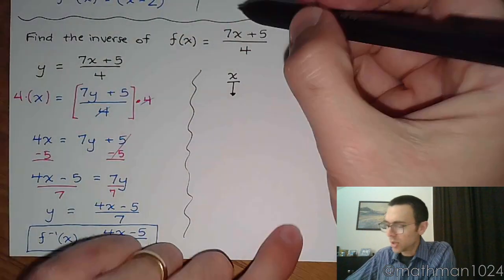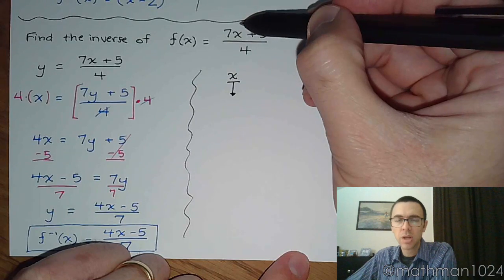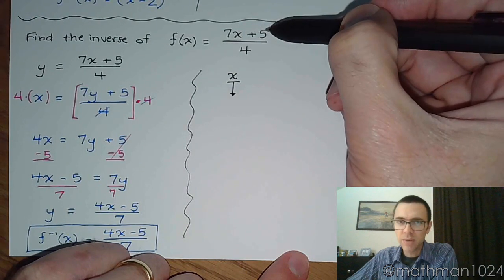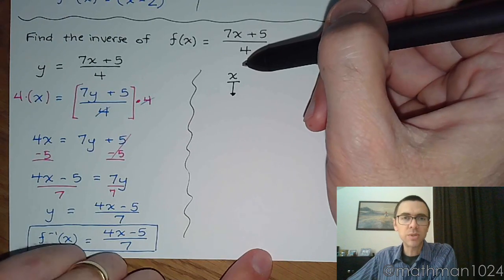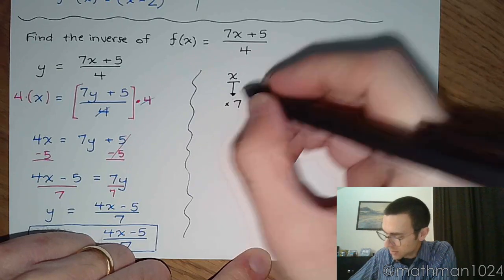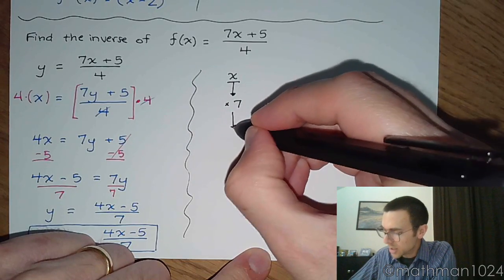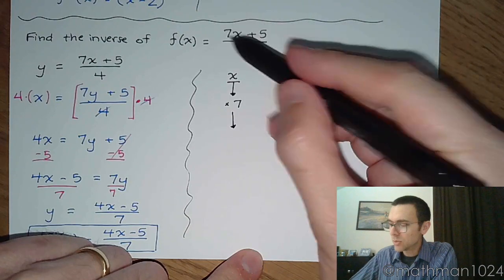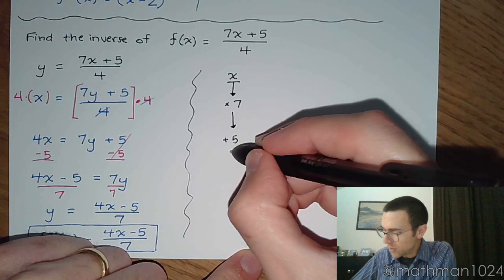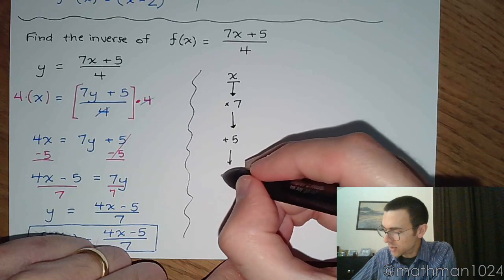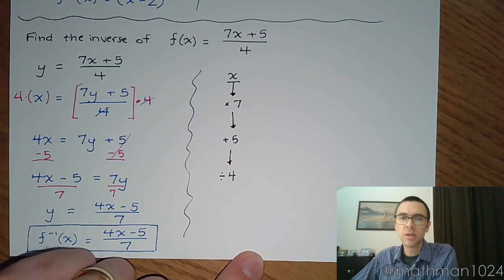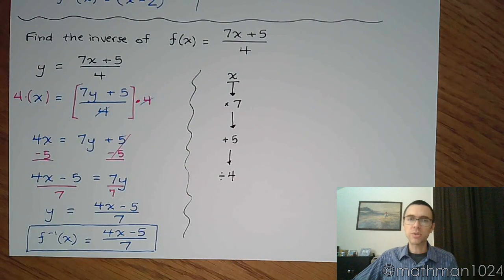So if I were to plug, say, the number 2 in here, what's the first thing you do if you plug in 2? Well, you wouldn't add 5. You wouldn't divide by 4. You multiply times 7 first. So the first thing you do is multiply times 7. After you multiply times 7, the next step would be to add the 5. And then once you've added the 5, you would then divide your answer by 4. That's what the function says to do if you follow the order of operations.